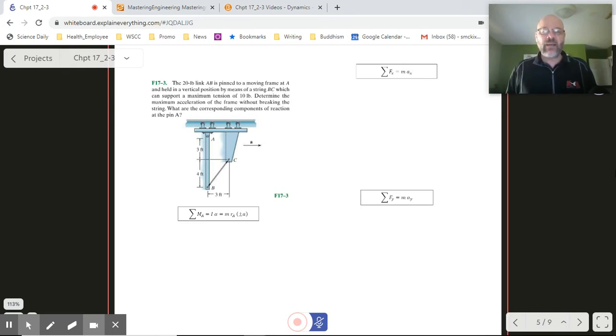We've got this 20 pound link moving and held in position. It's held up at A and being pulled by a string BC which can support a maximum tension of 10 pounds. Determine the maximum acceleration of the frame without breaking the string and the corresponding components of reaction at pin A.